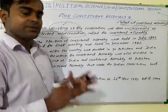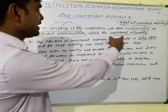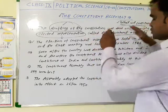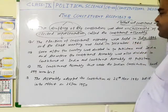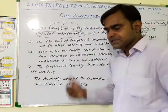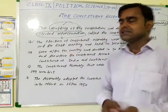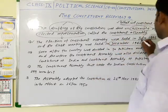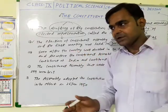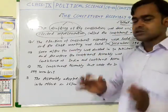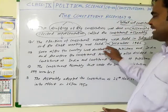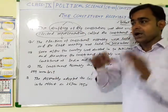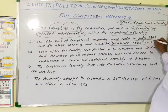The first meeting of the Constituent Assembly was held in December 1946. You should remember this date. At that time there were a total of 389 members. At that time, India had not yet been partitioned into Pakistan and India.